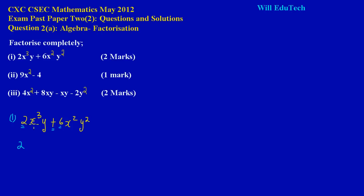The next letter is x. I have x³ and over here I have x². The trick is to take the x with the lowest power, so my highest common factor of the x's is x². Then I'm going to do the same thing for the y's. I have y to the first power there and y to the second power, so I am taking y — y to the one power. So basically 2x²y is my highest common factor of the expression.